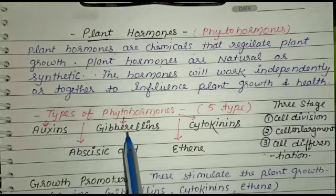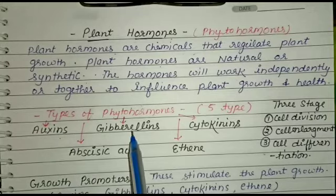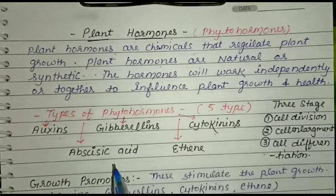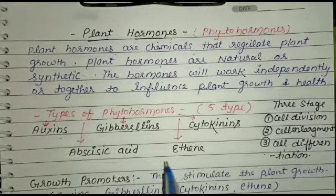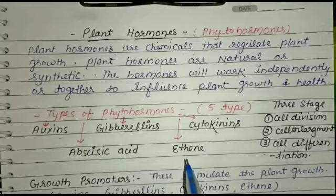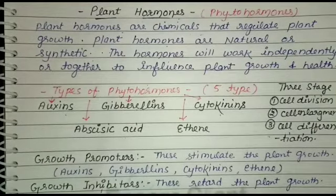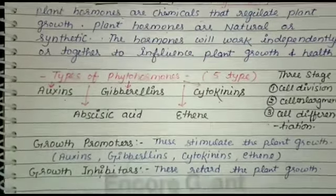There are five types of plant hormones present in plants: auxin, gibberellin, cytokinin, abscisic acid, and ethene.